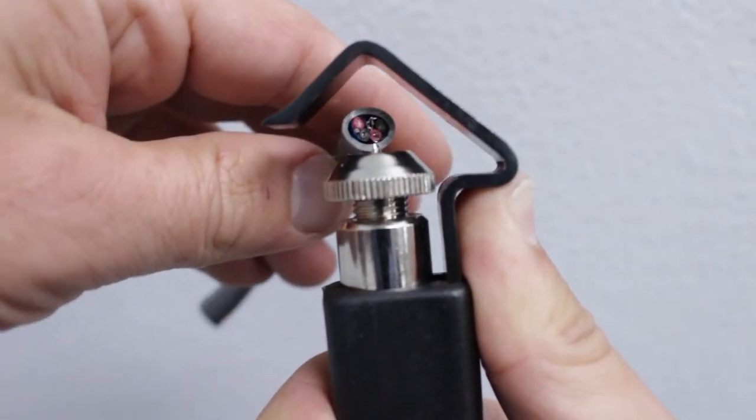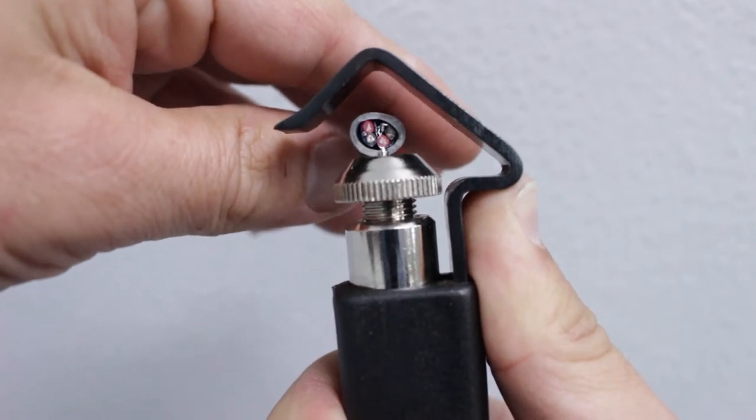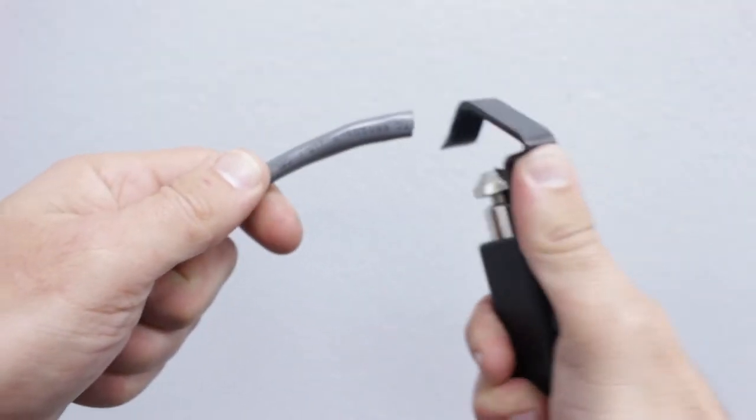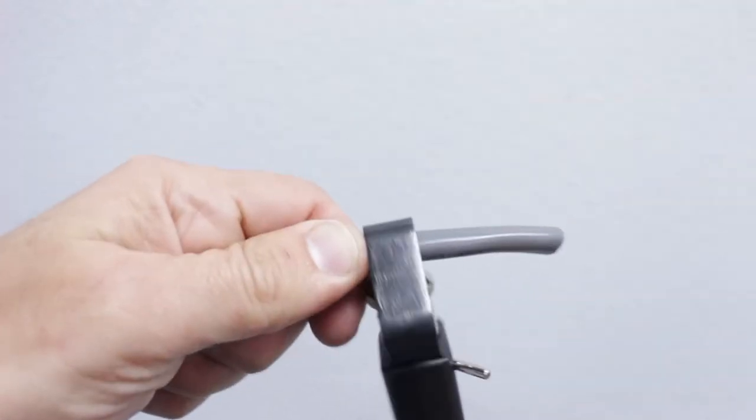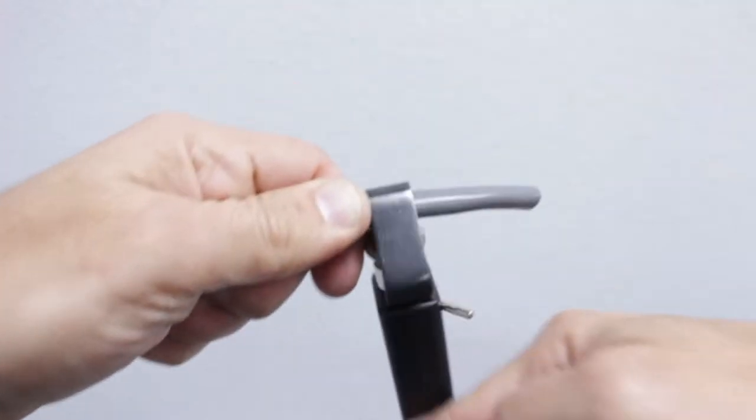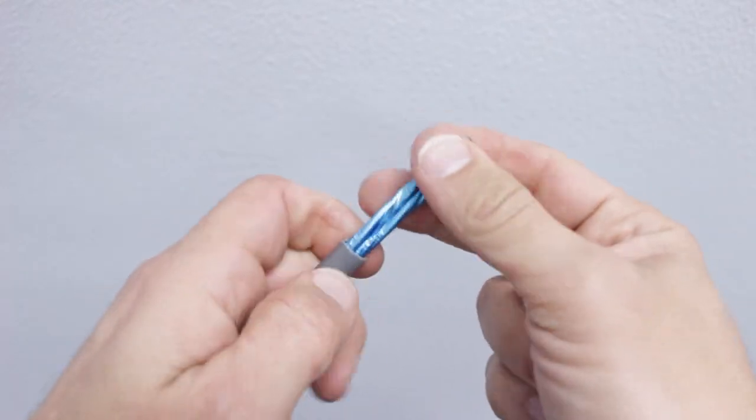Now using the round cable slit tool, we'll adjust the blade to the proper depth. Next, simply open the mouth of the tool and place it over the round cable. Make several full passes around the cable. Now you can pull the outer jacket off revealing the internal pairs.